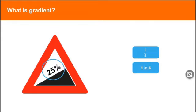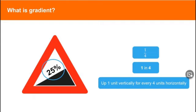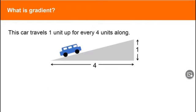This means you go up one unit vertically for every four units horizontally. Let's look at this on a diagram. This car travels one unit up for every four units along.